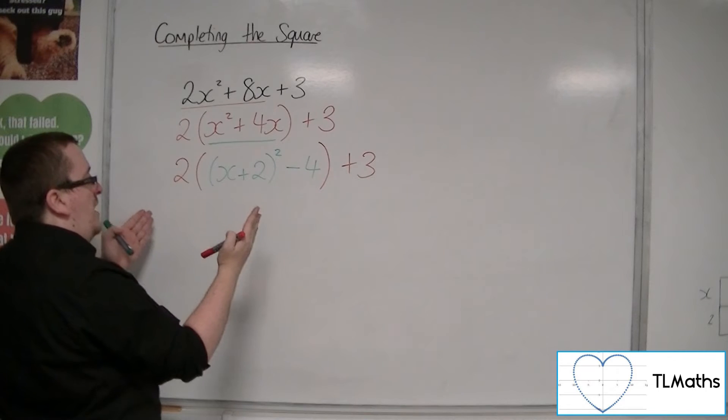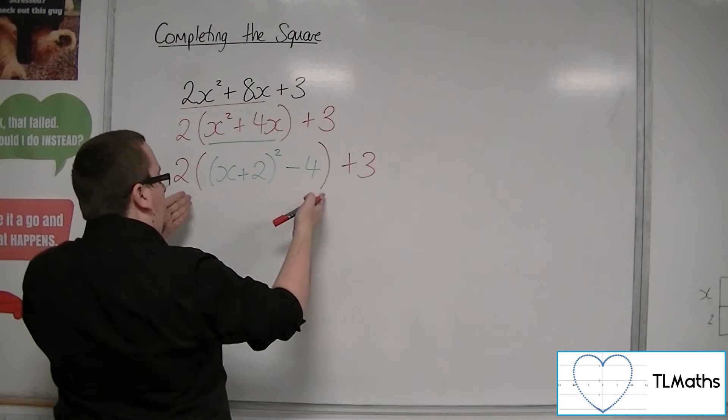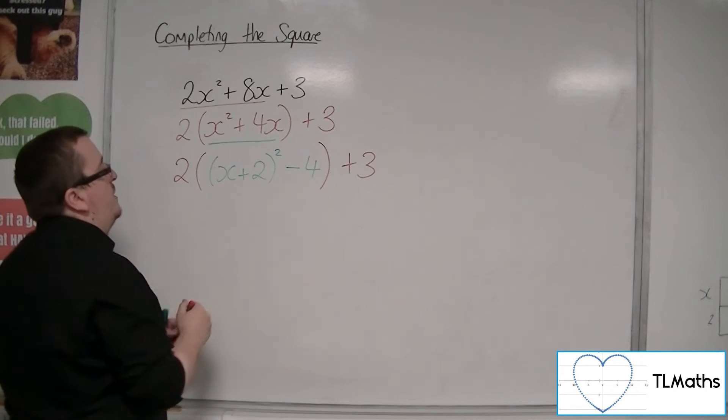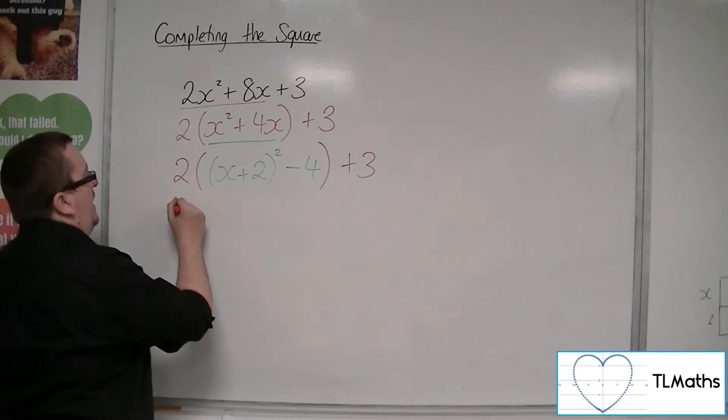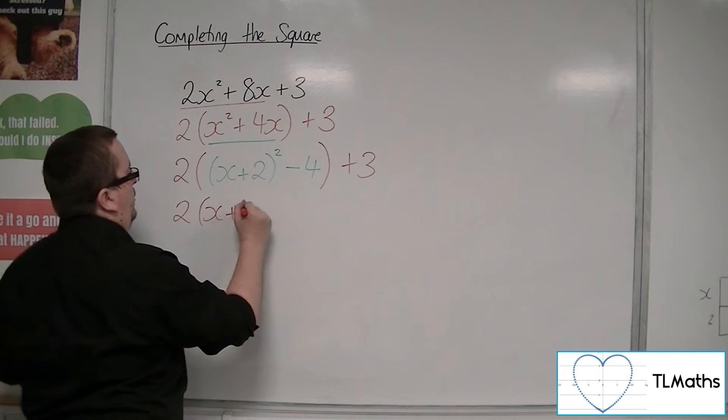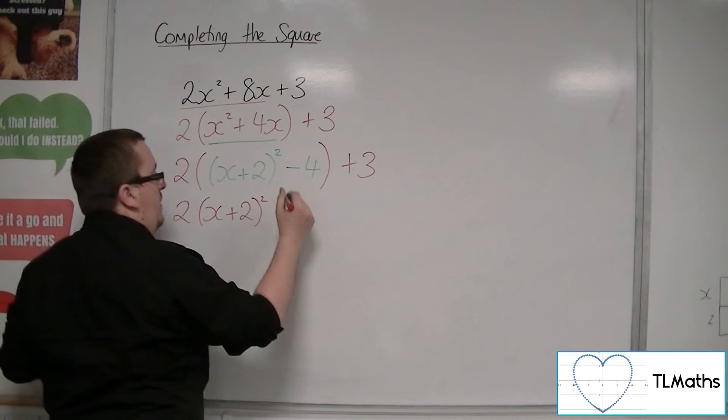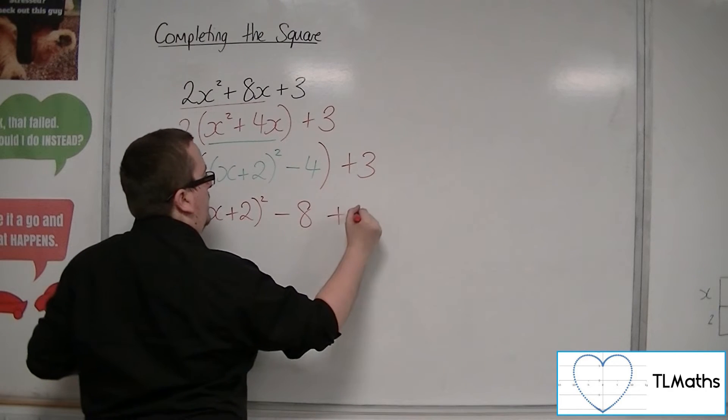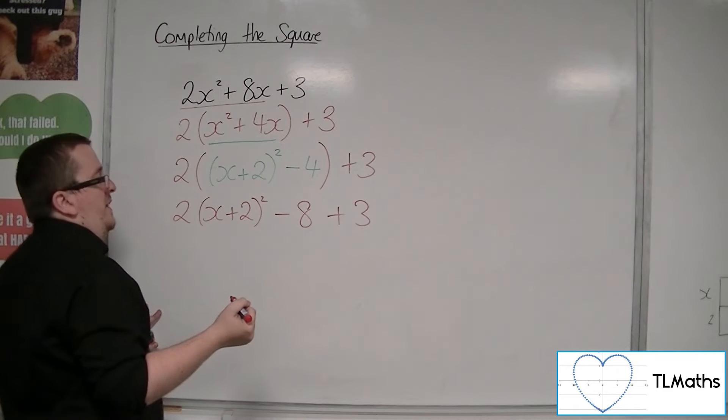I'm effectively going to expand the bracket, but I'm expanding that red bracket, not the green one. So we're going to have 2 lots of the x plus 2 squared, and I've got 2 lots of the minus 4, so minus 8, and I've got that plus 3 on the end.